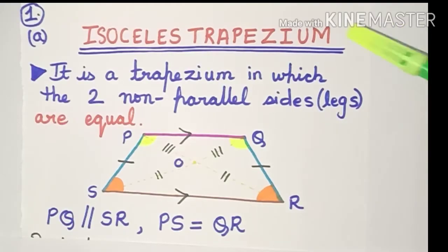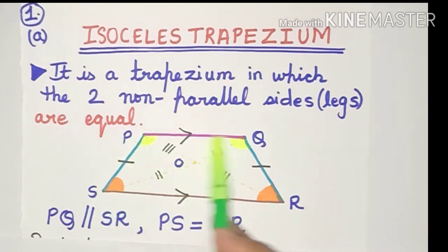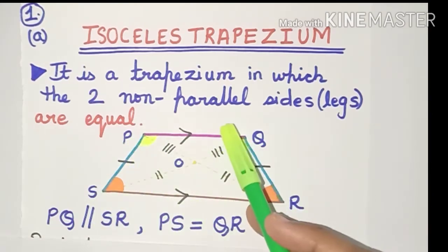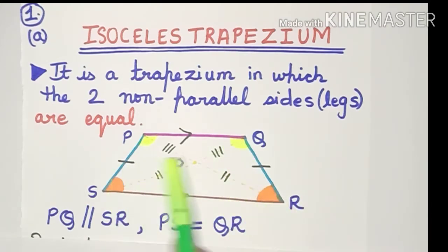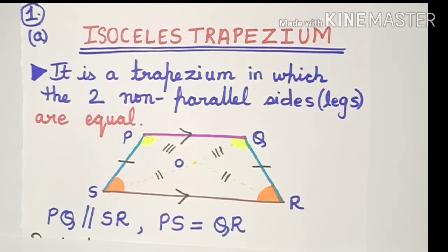A special type of trapezium is known as the isosceles trapezium. It is that trapezium in which the two non-parallel sides, or the legs, are going to be equal. So in this figure, it is already a trapezium because these two sides are parallel, and in addition these two non-parallel sides are equal to each other. So PQ is parallel to SR and PS is equal to QR. You can remember this by thinking of an isosceles triangle, which also has two equal sides.